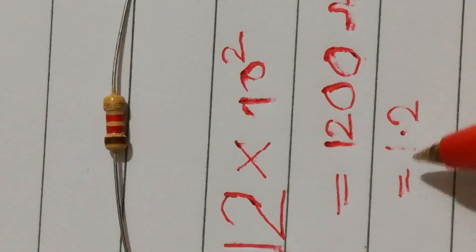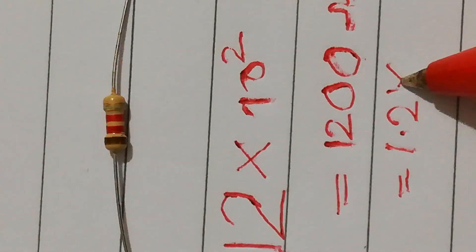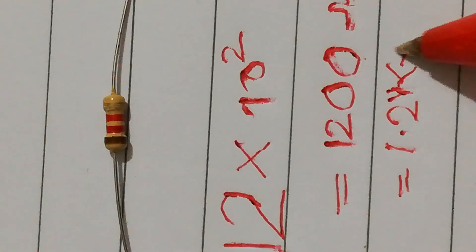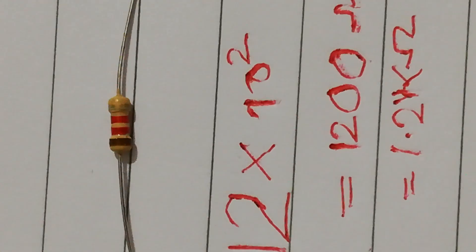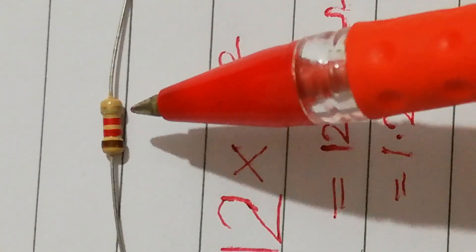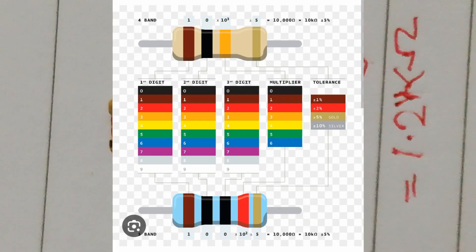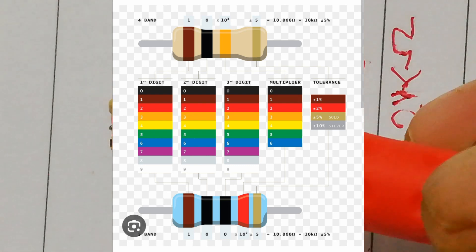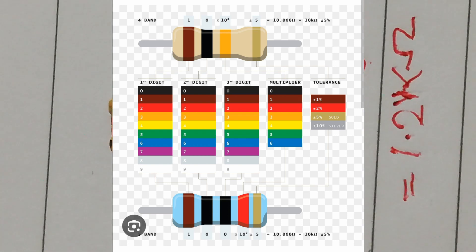Or you can say that the value of the resistor is 1.2 kilo-ohms. Now the final band is of color gold. So remember, the value of gold is a band for tolerance.